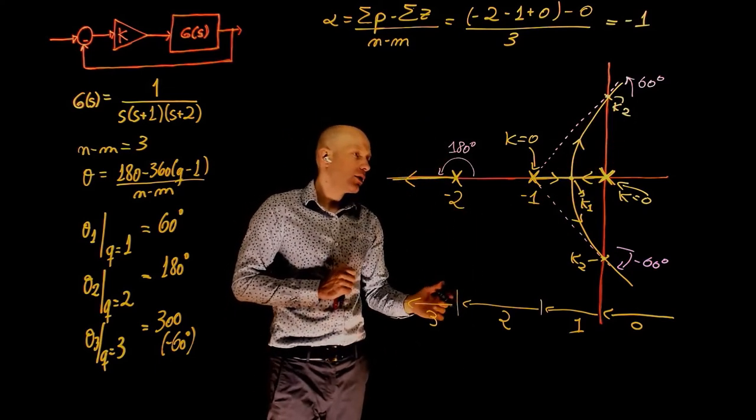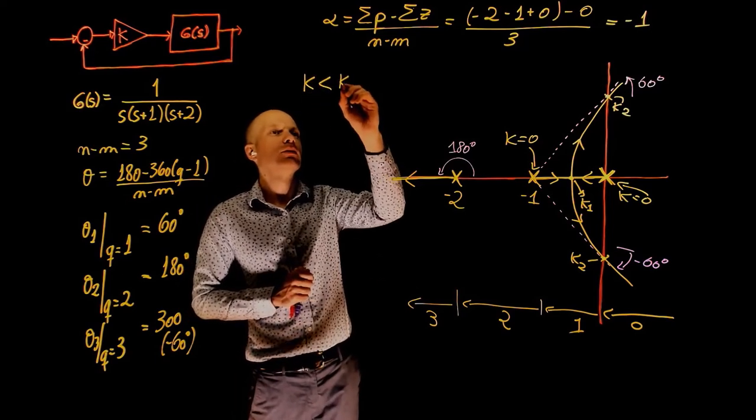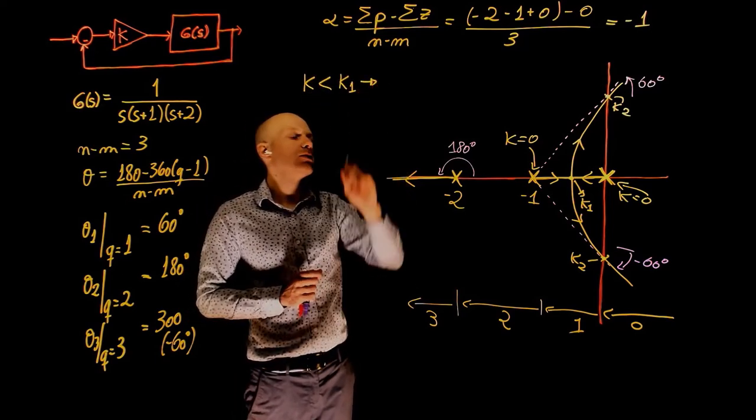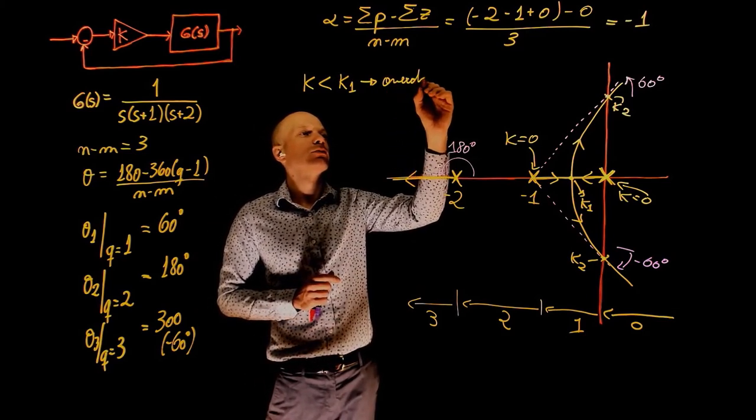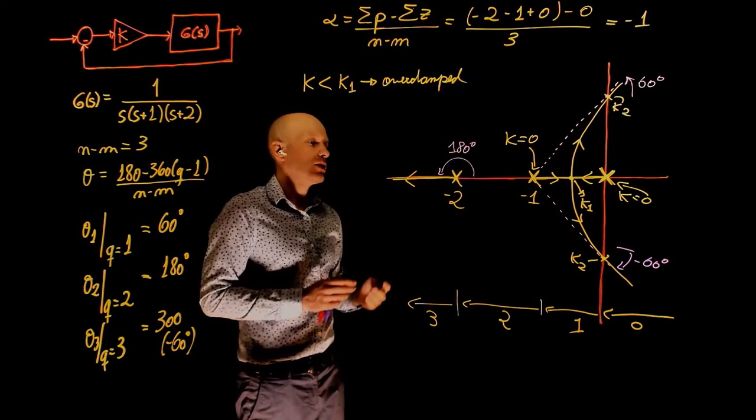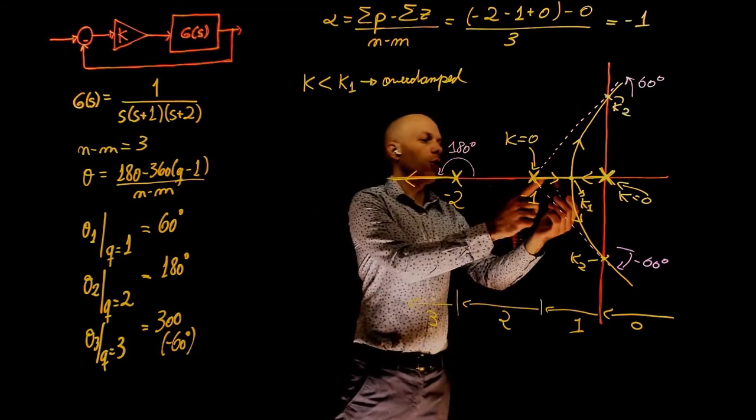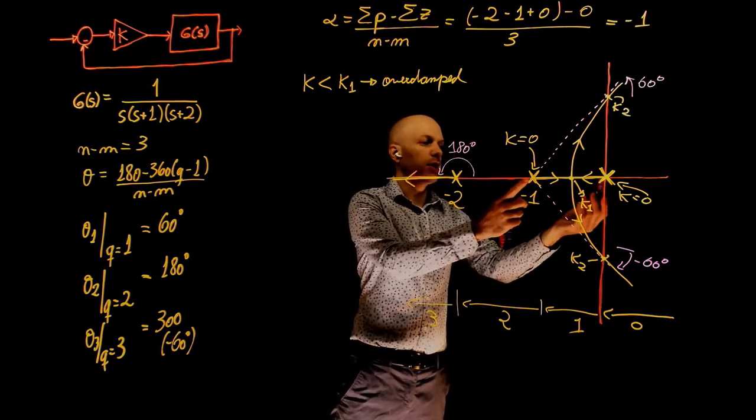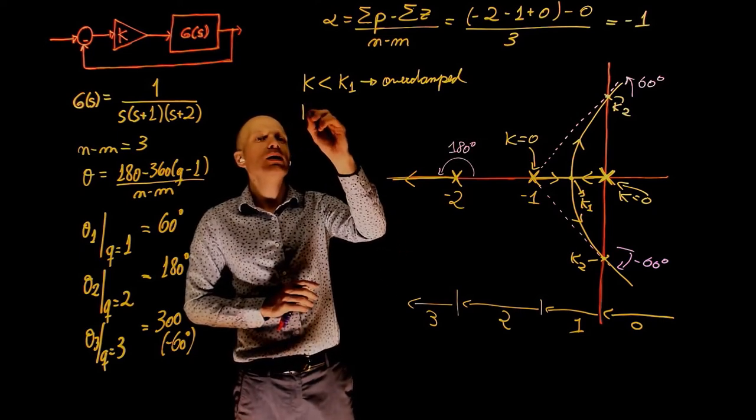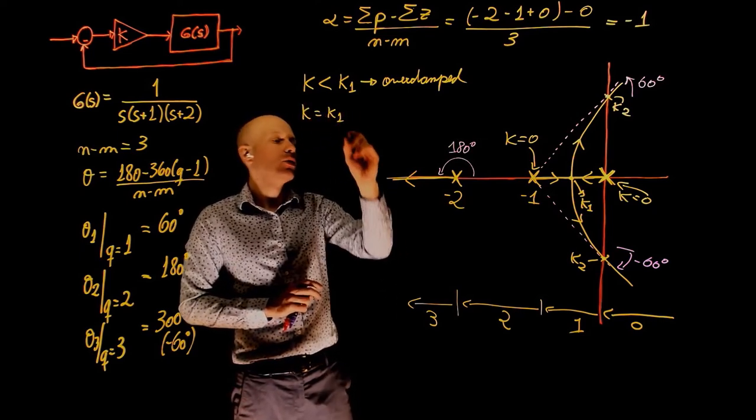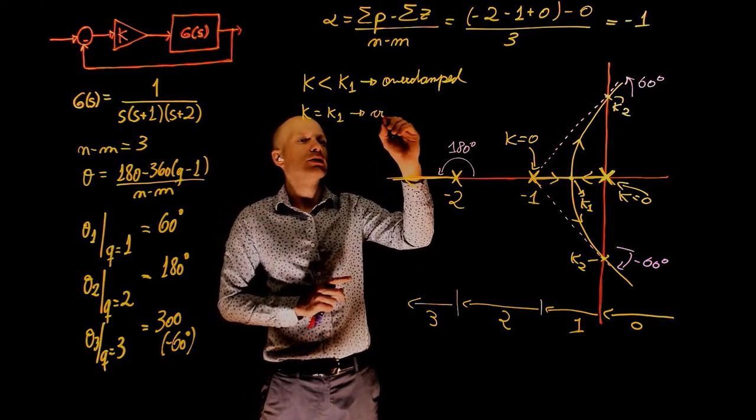We can say now that when k is smaller than k1, the system is overdamped. k is smaller than k1 means that we are within this region. And all poles are real numbers, and that's what characterizes an overdamped system. When k equals to k1, we are right at this point here. And this characterizes a critically damped system.